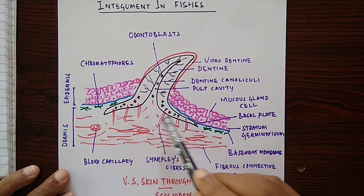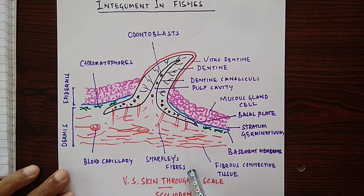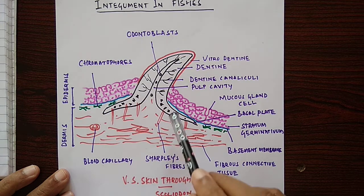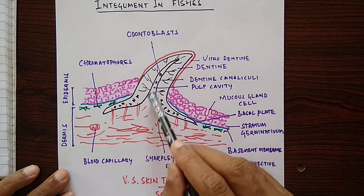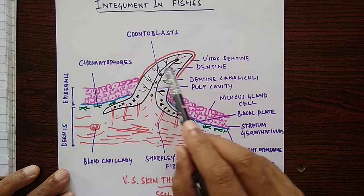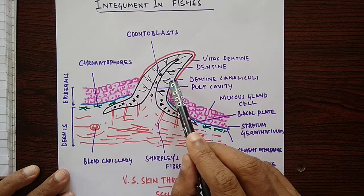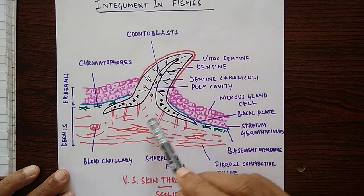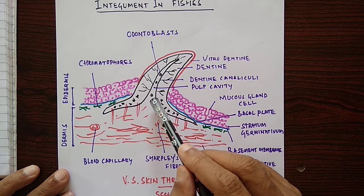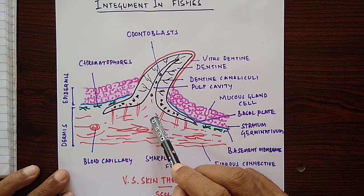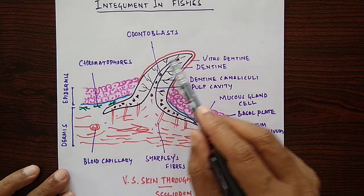The basal plate is embedded in the dermis and connected to it by Sharpey's fibers. The scale has a cavity at the center called the pulp cavity. Odontoblast cells within the pulp secrete the dentine, and their extensions go into the dentine canaliculi. The pulp cavity also contains nerves, blood capillaries, veins, and arteries.